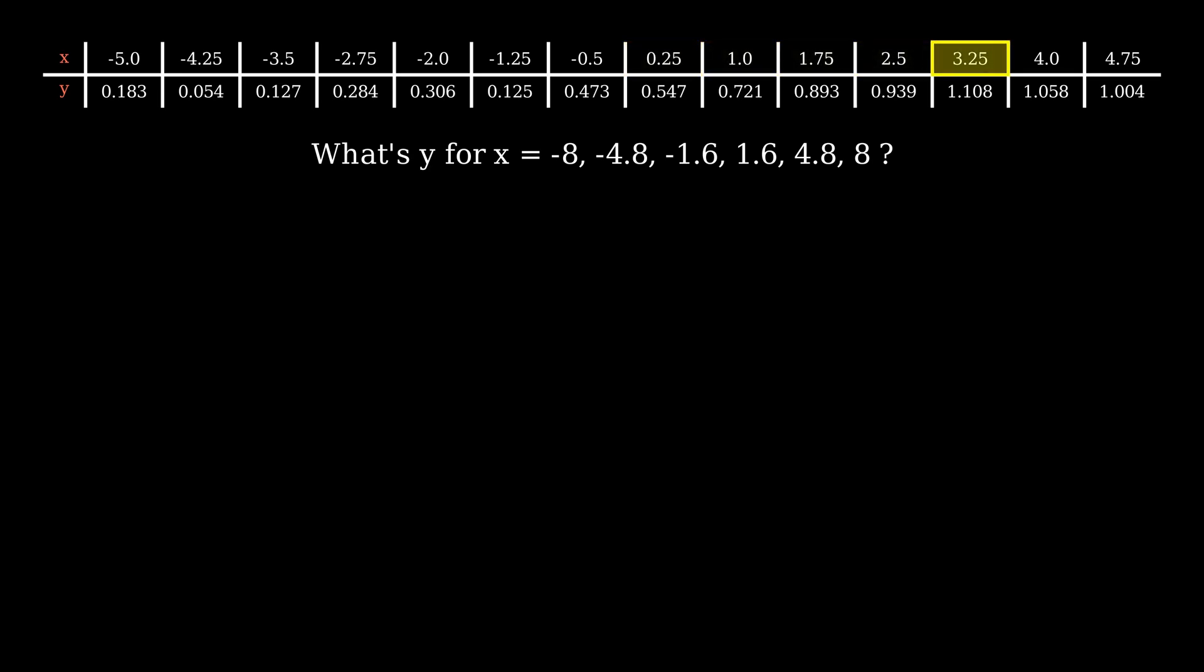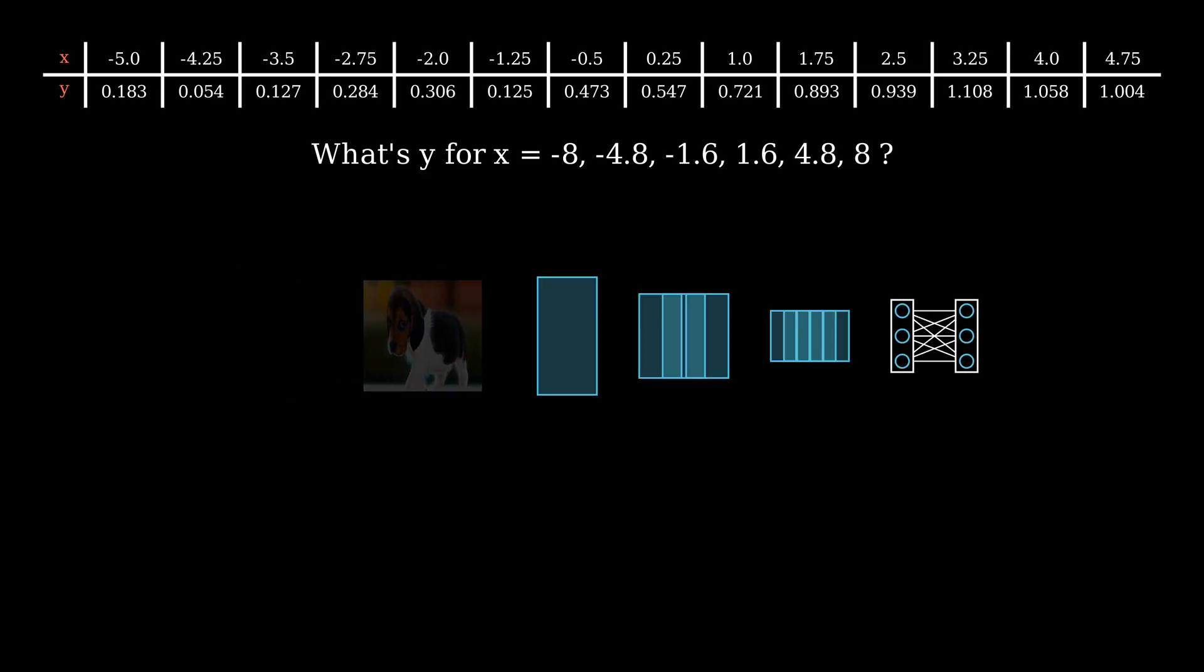Believe it or not, machine learning is a way to solve such problems. I am oversimplifying things here, but this is somewhat similar to a lot of example cases involving machine learning that everyone is familiar with. Like image detection, where a network predicts whether the input image is a cat or a dog.